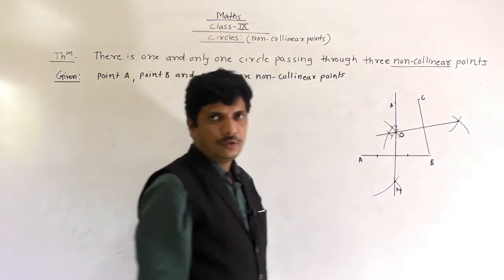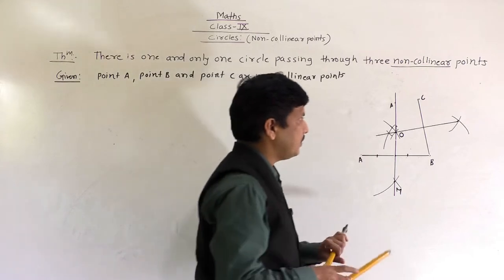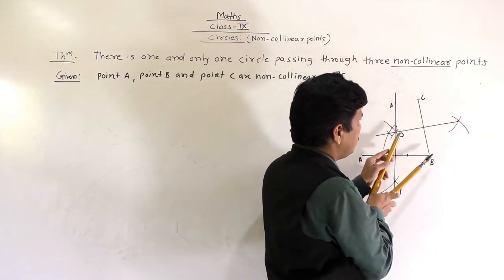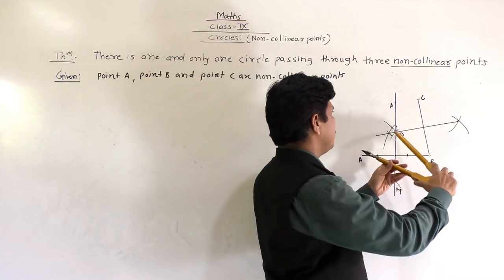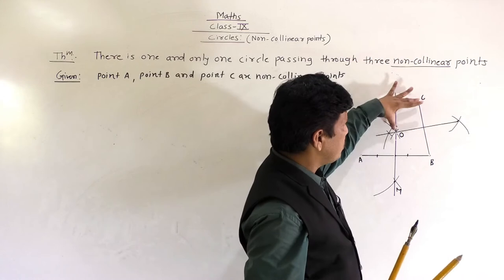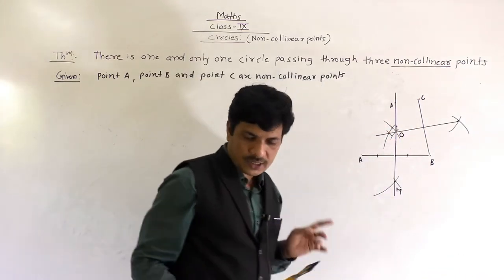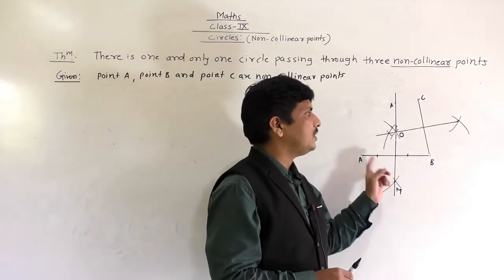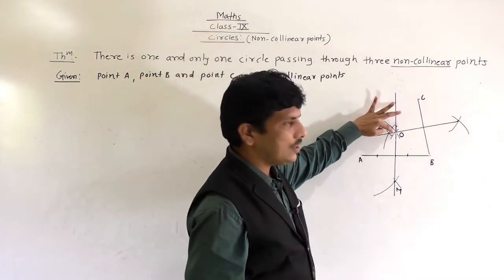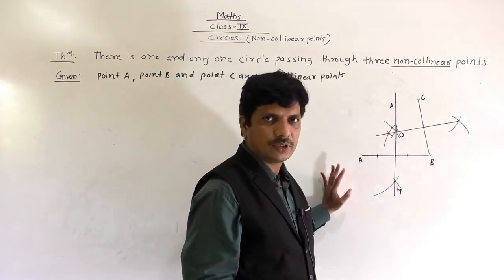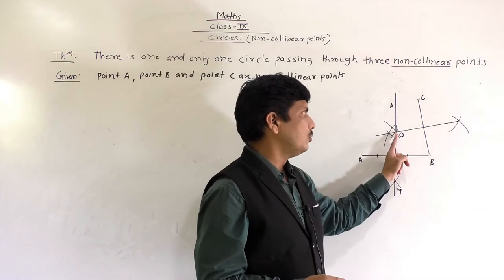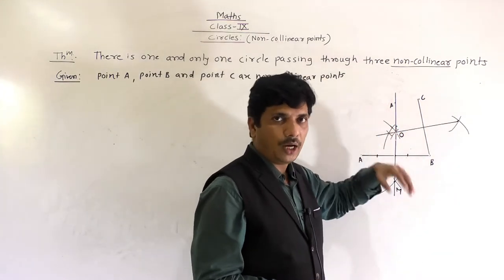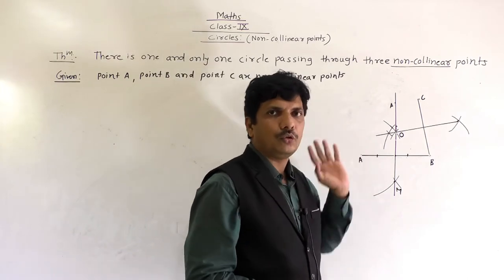When you join both perpendicular bisectors, you get an intersection point, which we call O. The distances OC, OB, and OA are all equal — so O is the circumcenter of these three points. You can construct a circle passing through all three points A, B, and C, with O as the center and OA, OB, or OC as the radius.